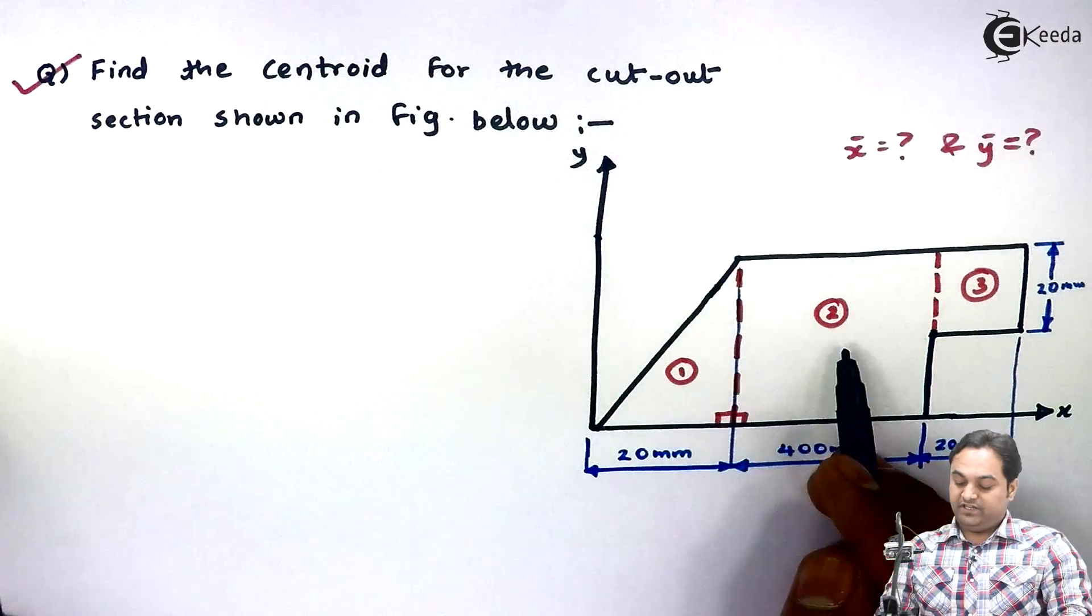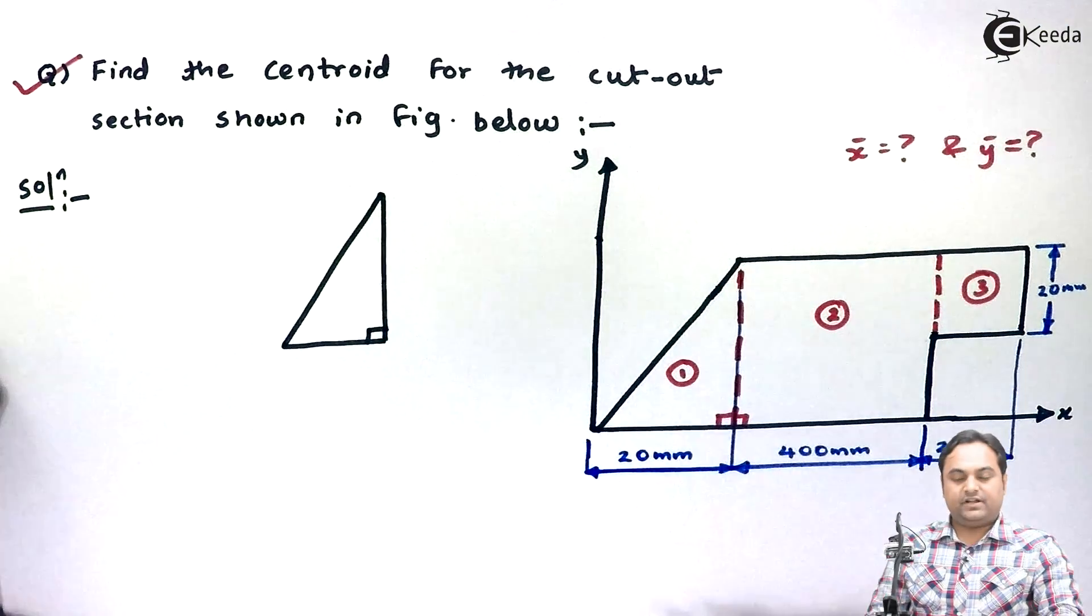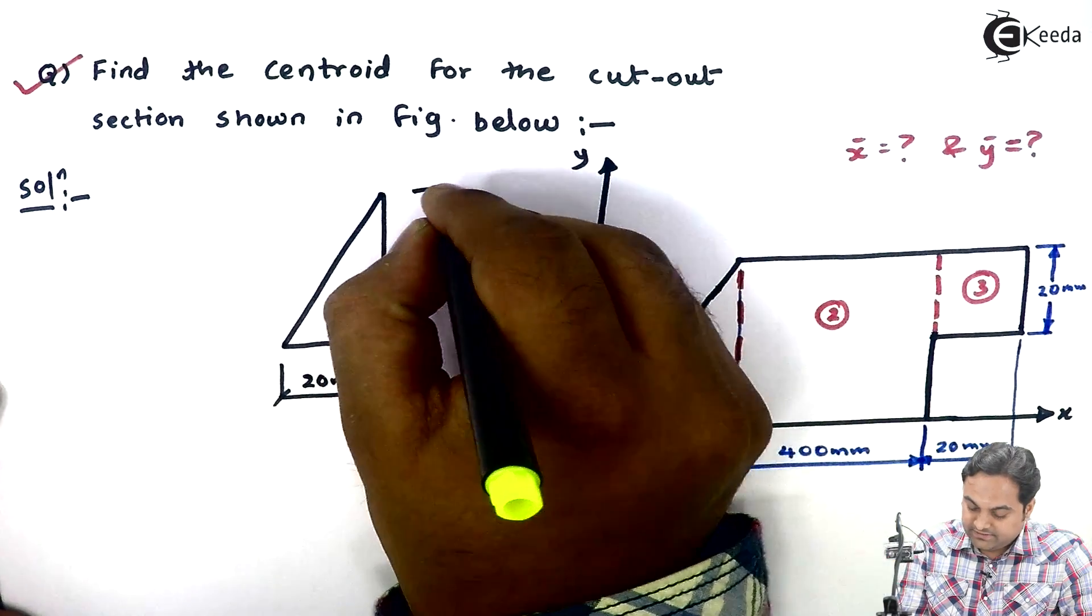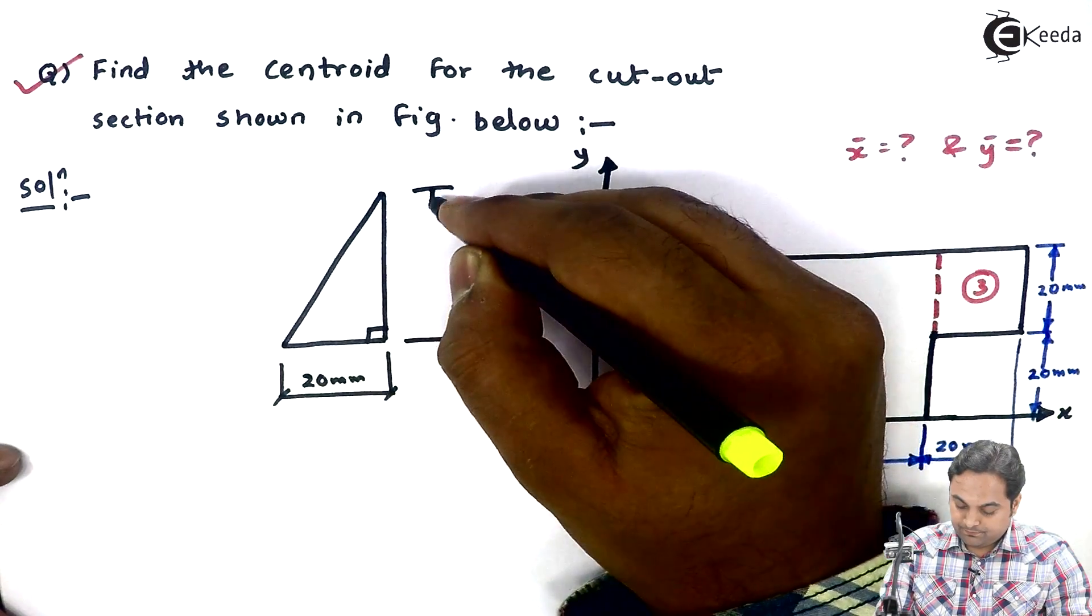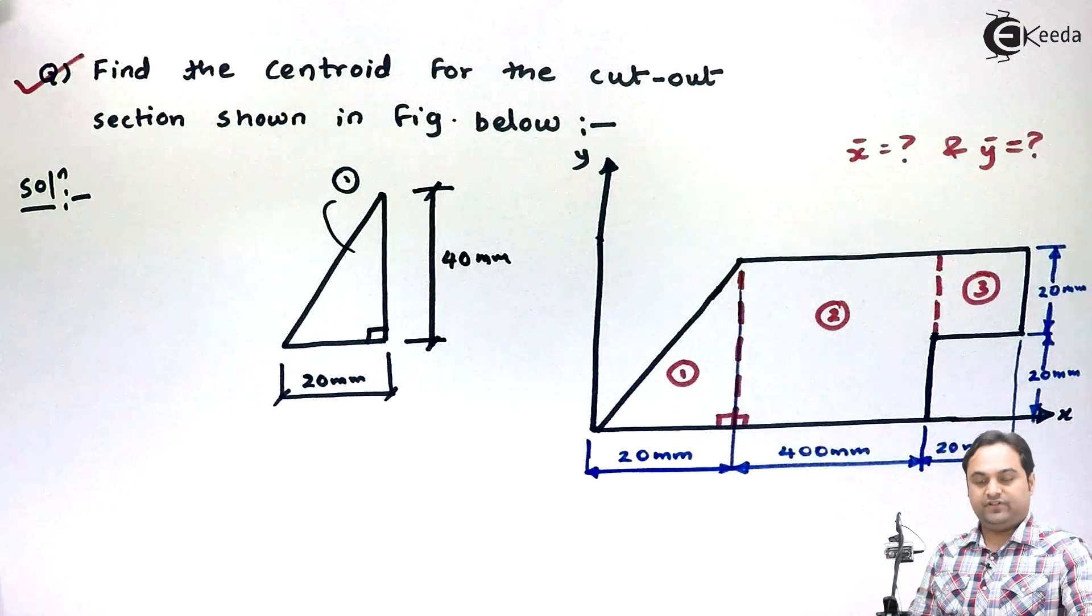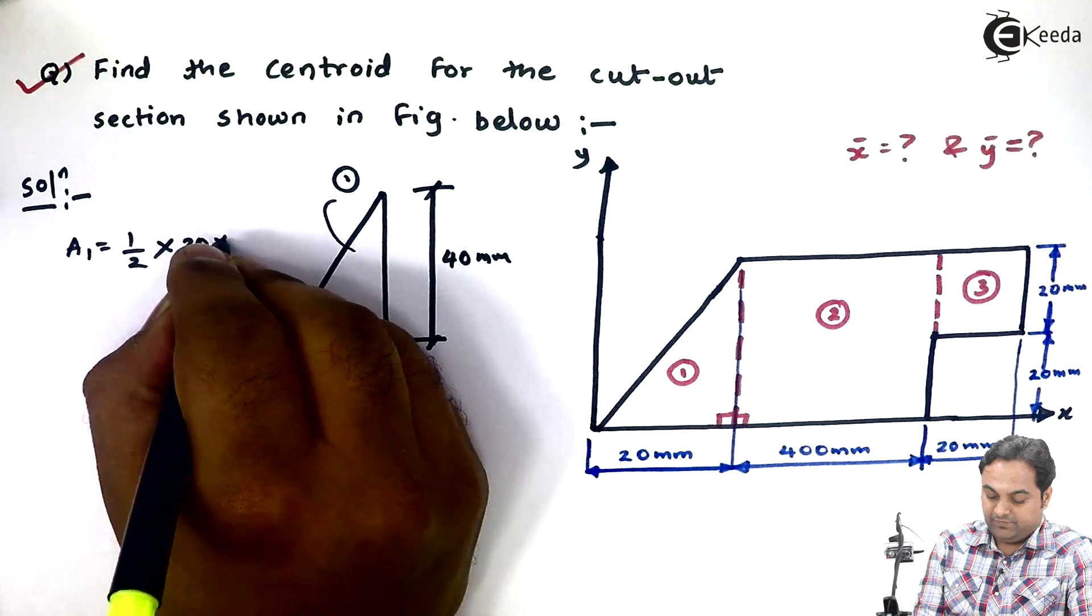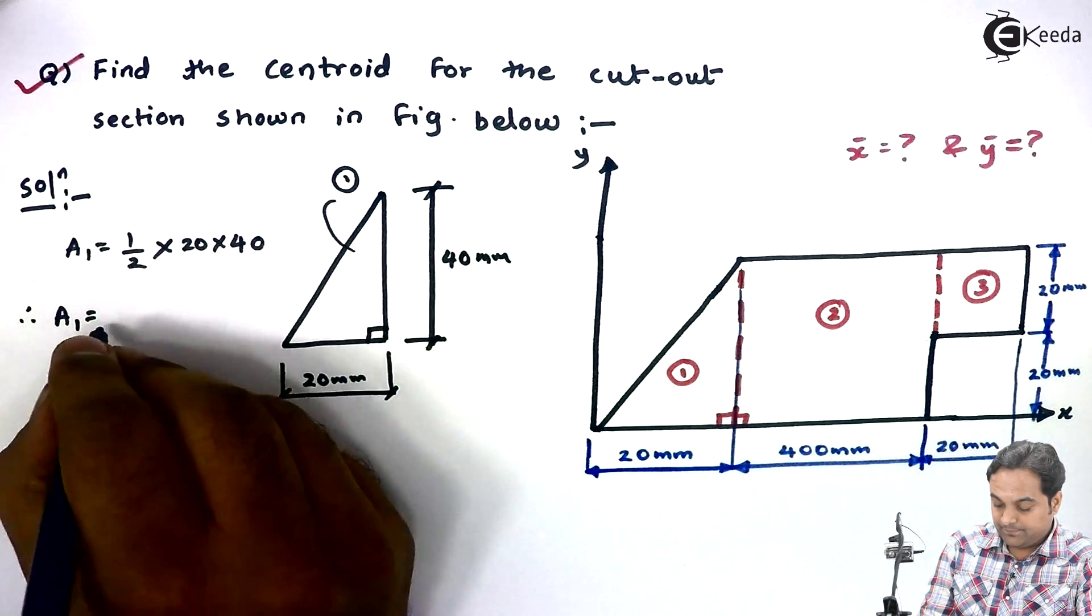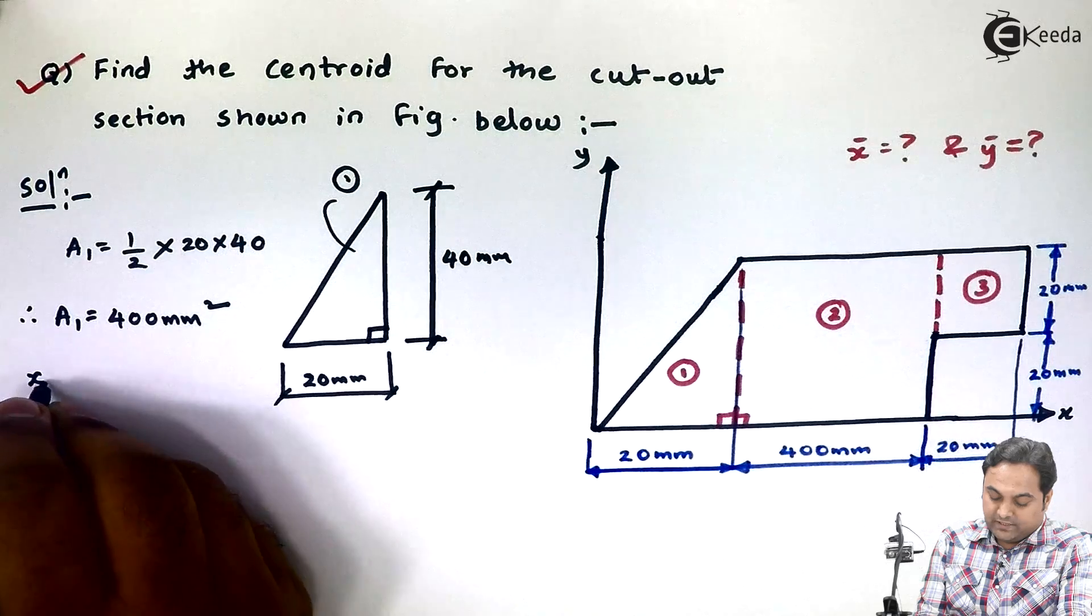For such kind of figure we need to find the centroid. Now I take one figure at a time. First I would be taking the triangle. I will separate this triangle - its base is 20 mm and its height is 20 plus 20, that is 40 mm. So area for this triangle, which is first figure for us, a1, equals half into base into height. So half into 20 multiplied by 40.